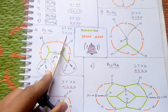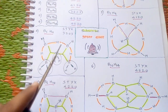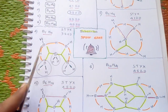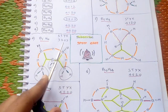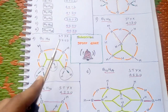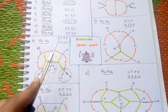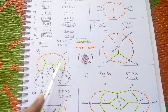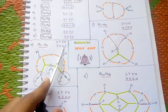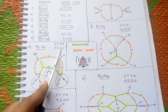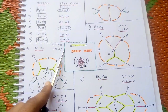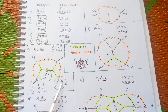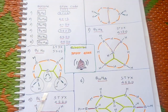For B5H11, the STYX code is 3203. Three BHB bonds are present. T, the BBB bonds, is two. Y, the BB bonds, is zero — no BB bonds. X equals three, meaning three BH2 groups are present.